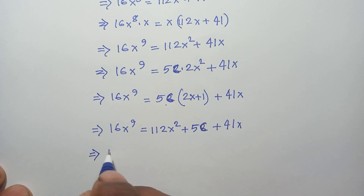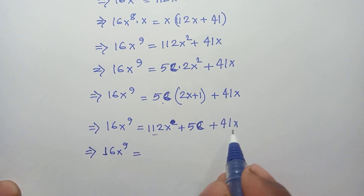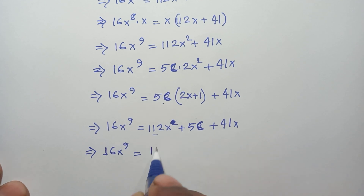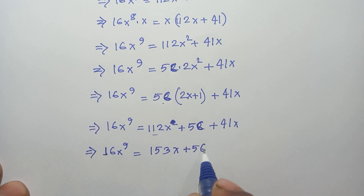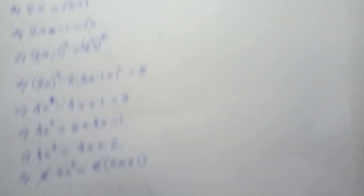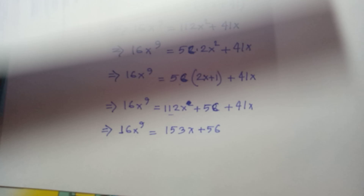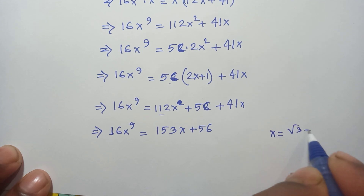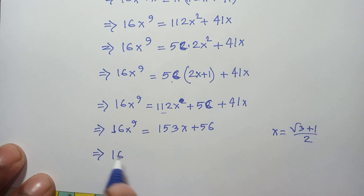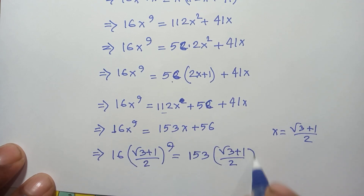Simplifying: 16x⁹ = 104x + 52 + 41x = wait — combining all terms gives 16x⁹ = 153x + 56. Now substituting back x = (√3 + 1)/2: 16·((√3 + 1)/2)⁹ = 153·((√3 + 1)/2) + 56.